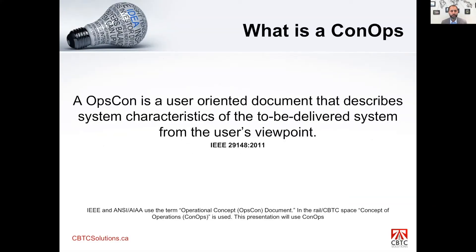What is a CONOPS? If we go with the IEEE definition, a CONOPS is a user-oriented document that describes system characteristics of the to-be-delivered system from the end-user's viewpoint. Basically, you are trying to figure out or understand what the frontline personnel using the system needs, and what the priorities and concerns are in order for them to do their job.